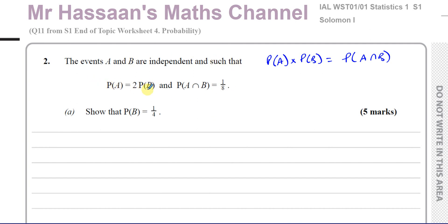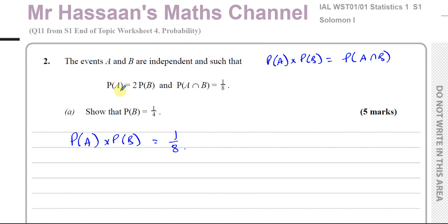We know the probability of A is 2 times the probability of B. To show that the probability of B equals 1/4, we can say that the probability of A times the probability of B equals the probability of A intersection B, which is 1/8. Because we want to find the probability of B, I can use substitution — replacing the probability of A with 2 times the probability of B. So this becomes 2 times P(B) times P(B), which equals 1/8.